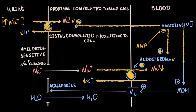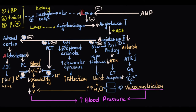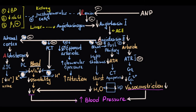ANP inhibits angiotensin-2-induced release of antidiuretic hormone from the posterior pituitary, thus stimulating water diuresis by curbing the effects of ADH on water reabsorption in the distal tubule. ANP also decreases vascular resistance by inhibiting angiotensin-2-induced vasoconstriction. Both lower blood volume and vasodilation lead to decreasing blood pressure.